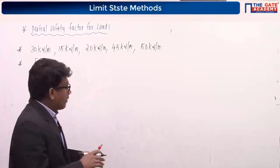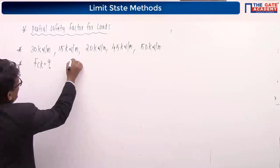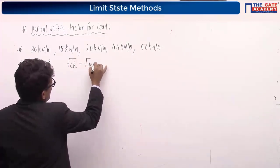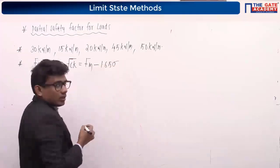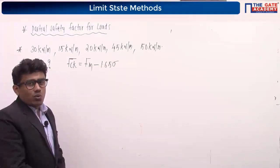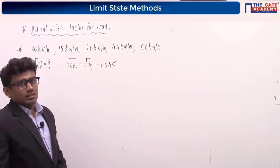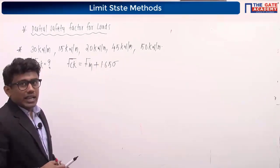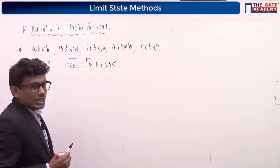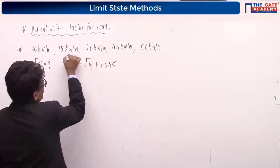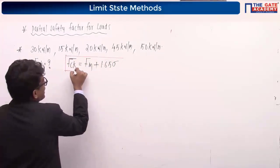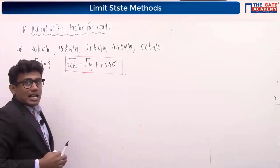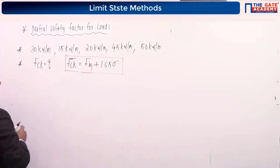How do we find the characteristic load? The characteristic load Fck is equal to Fm plus 1.65 sigma. That is, the characteristic load equals the mean load plus 1.65 times the standard deviation.